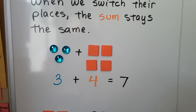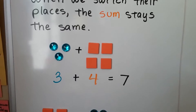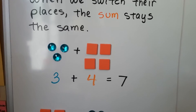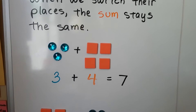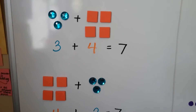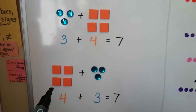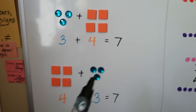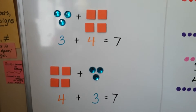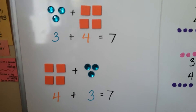We can do three blue gems plus four orange squares, and that's going to equal seven. We can also do four orange squares plus three blue gems — that's going to equal seven.